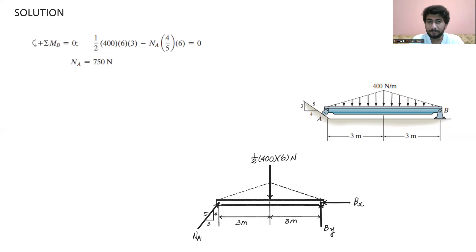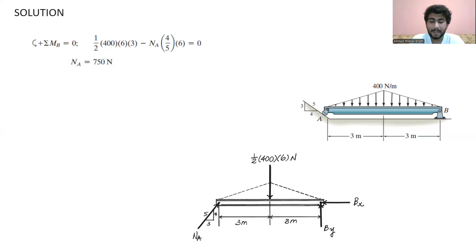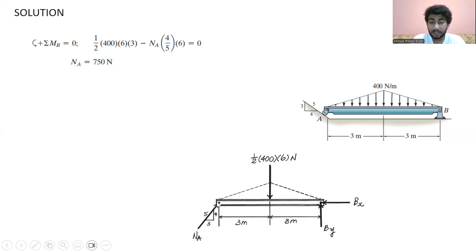To find the reaction force at point A, we apply moments at point B. We get one-half multiplied by 400 multiplied by six newtons, which has a moment arm of three meters from point B, and we have this negative reaction force A. We can think that this reaction force A is acting in a vertical direction, so we use the sine component, which is perpendicular over hypotenuse, which is 4 over 5, and it has a perpendicular distance of six meters.